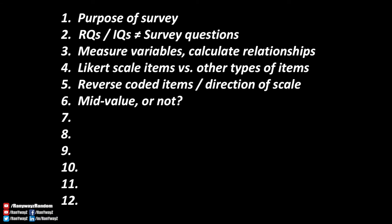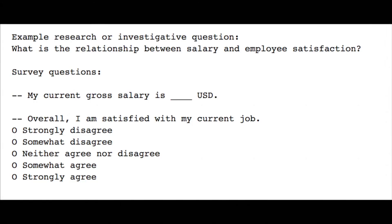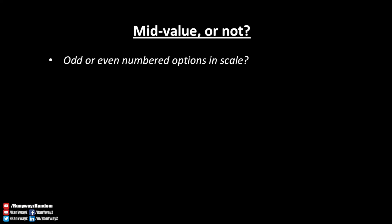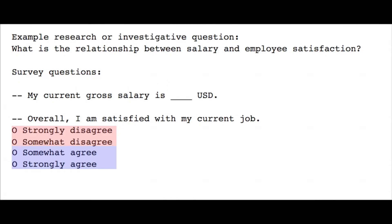Number six: mid-value or not. This is a question about whether we should use even-numbered or odd-numbered points in the scale. If we use a five-point or seven-point Likert scale, respondents can choose right in the middle and express complete neutrality. Some researchers prefer not to give respondents this option, considering the tendency for some people to always go for the middle. Therefore, if we use a scale with even-numbered options — like a four-point or six-point scale — we would essentially force the respondents to lean either towards disagreement or agreement, which in some situations may be a very necessary thing to do.